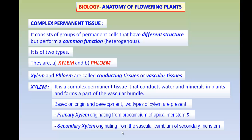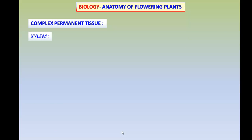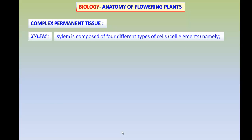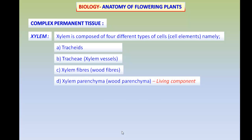The xylem is composed of four different types of cells or elements: tracheids, tracheae or xylem vessels, xylem fibers or wood fibers, and xylem parenchyma or wood parenchyma.